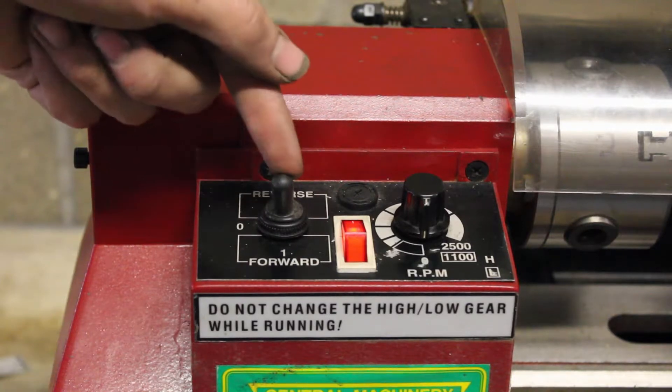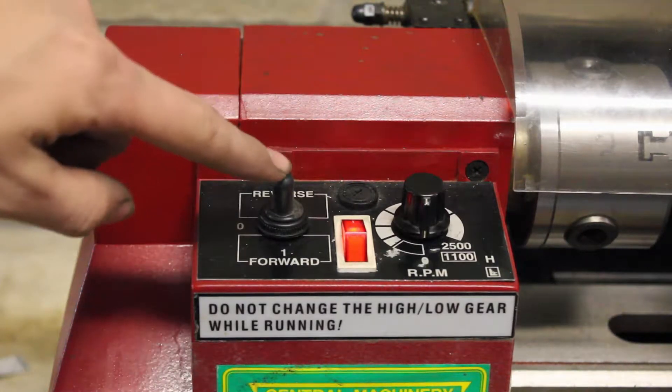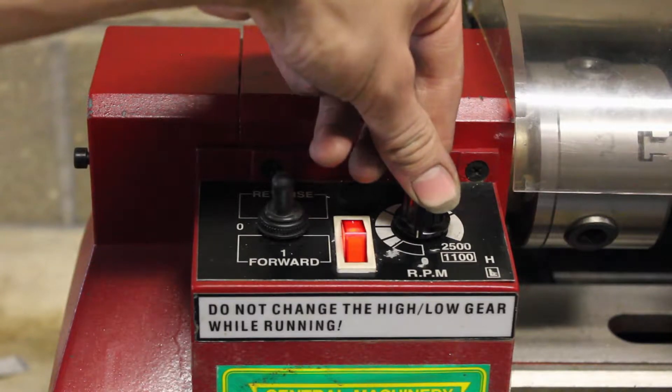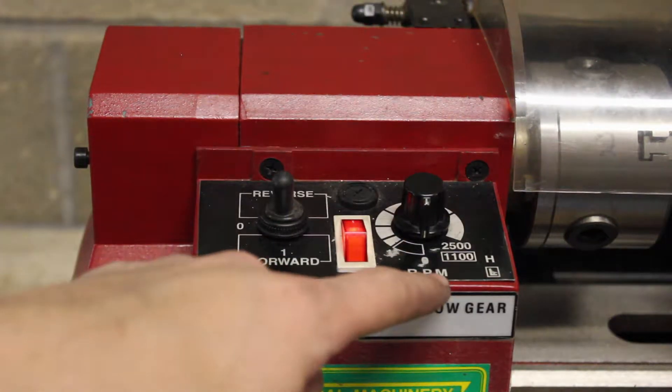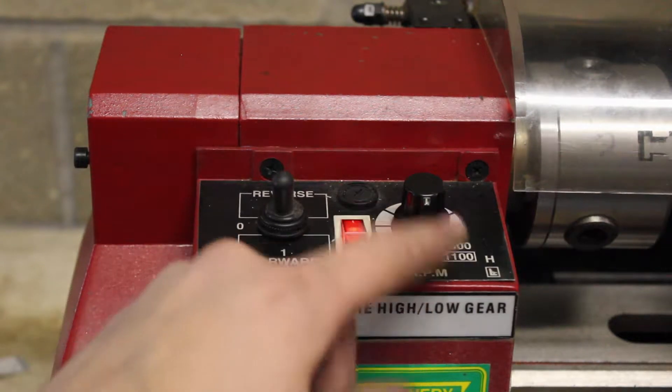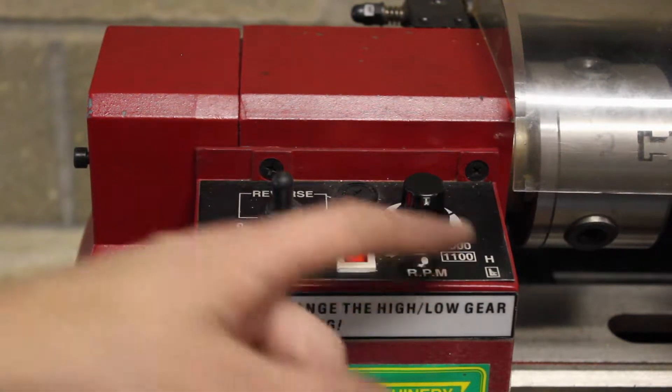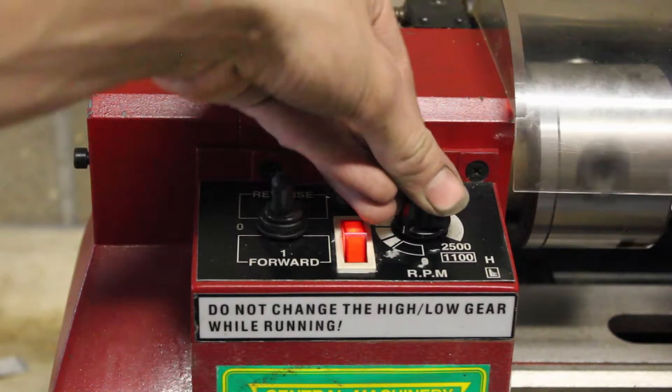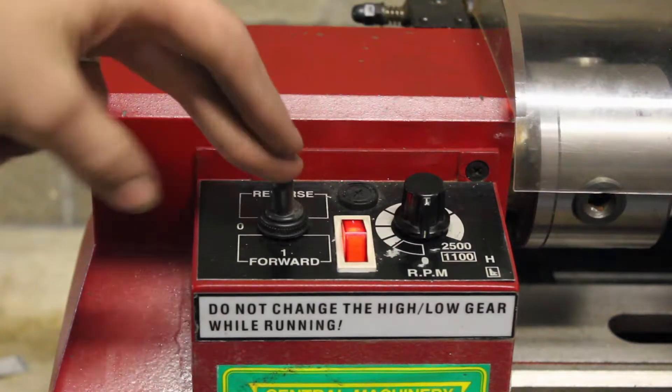So if you have it in forward, which is what it's going to normally be in, you can use this knob here to adjust the speed to anything from 0 to 2500 or 0 to 1100 depending on what gear you're in.